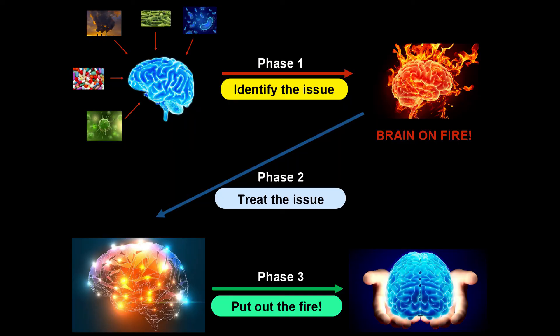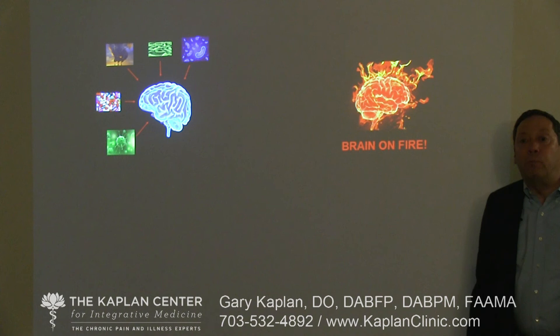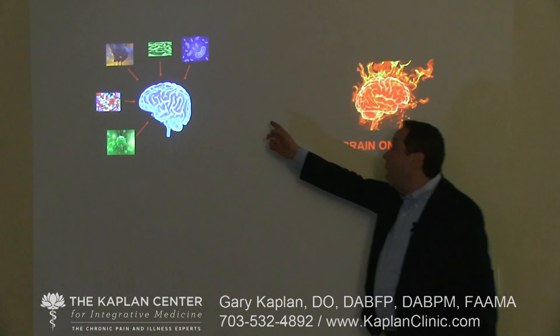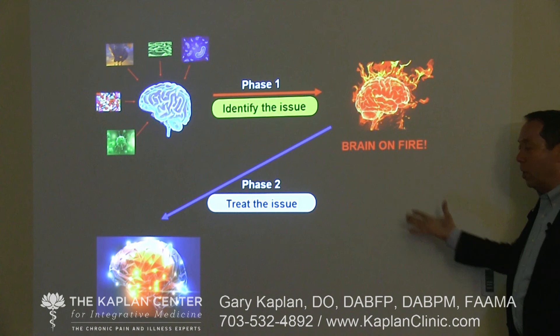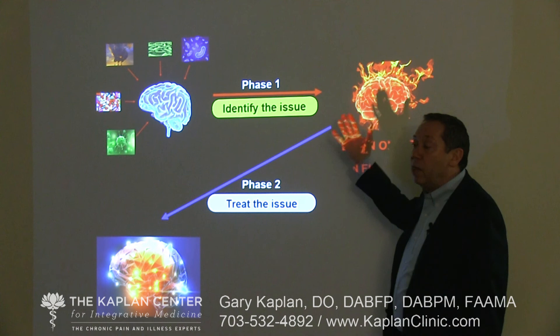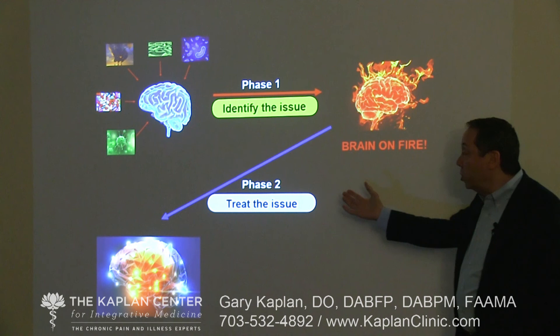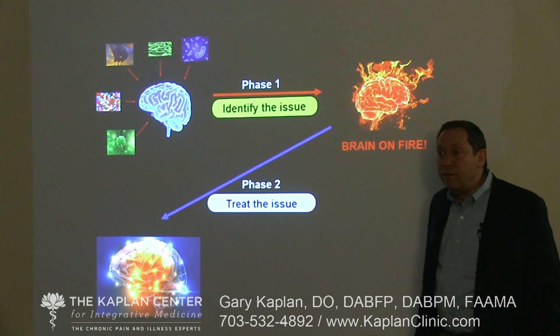You need to treat bottom-up as well as top-down. Back to one, two, three: identify the problems that started the fire, because this is a neuroinflammatory disease with many different causes. Once you've identified them, treat all of them — the parasites, the infections, the toxins, the gut, and the psychological issues. All of them.